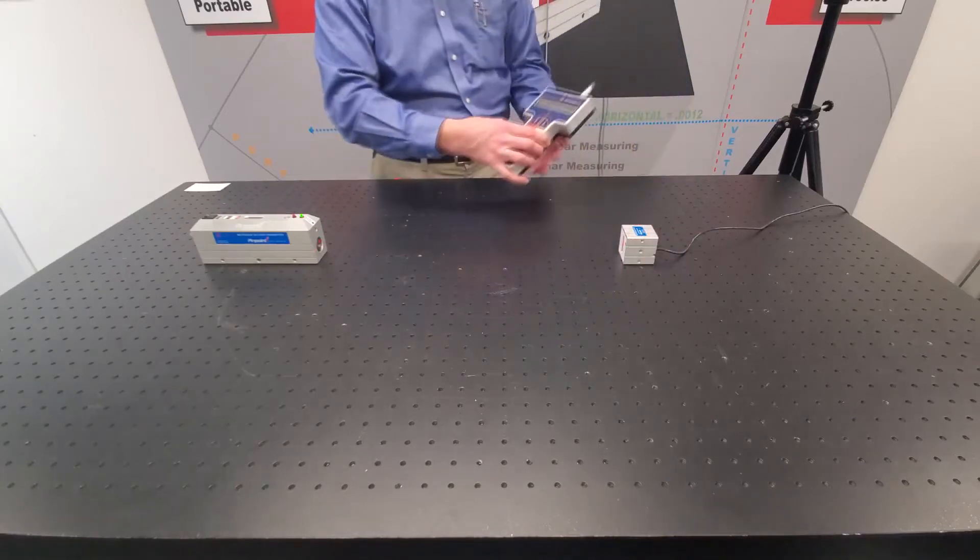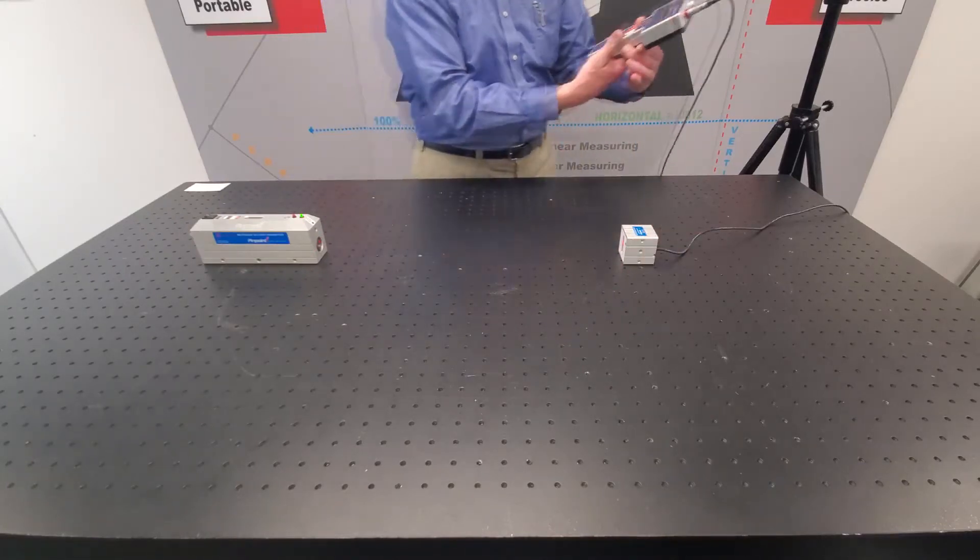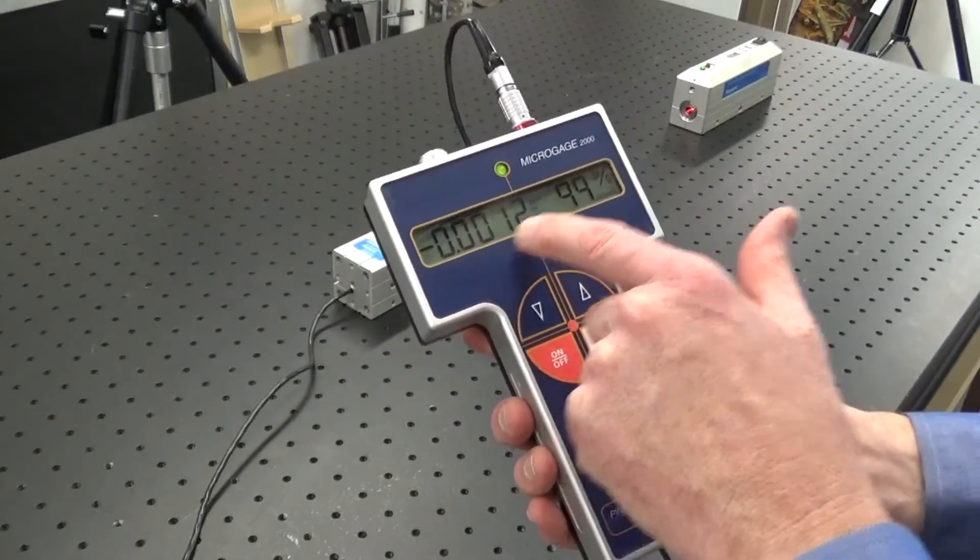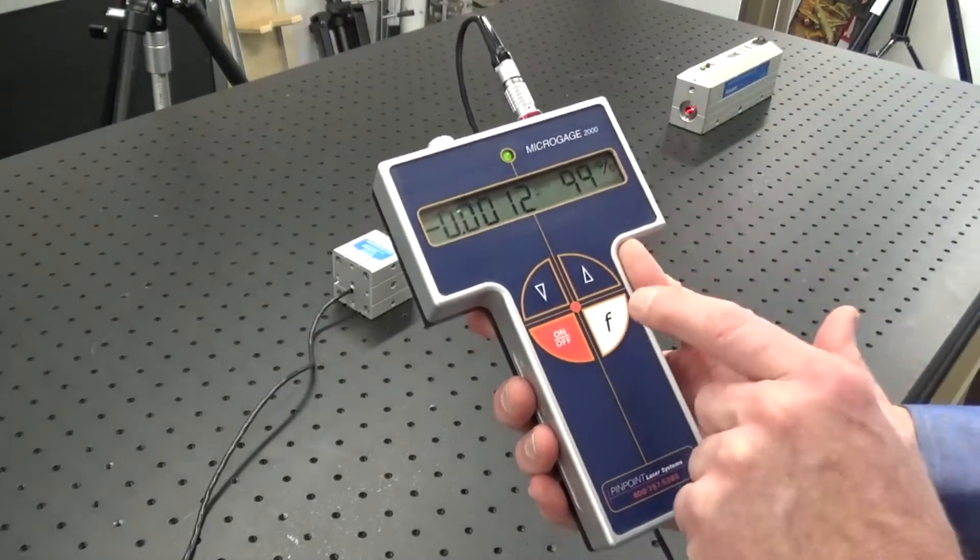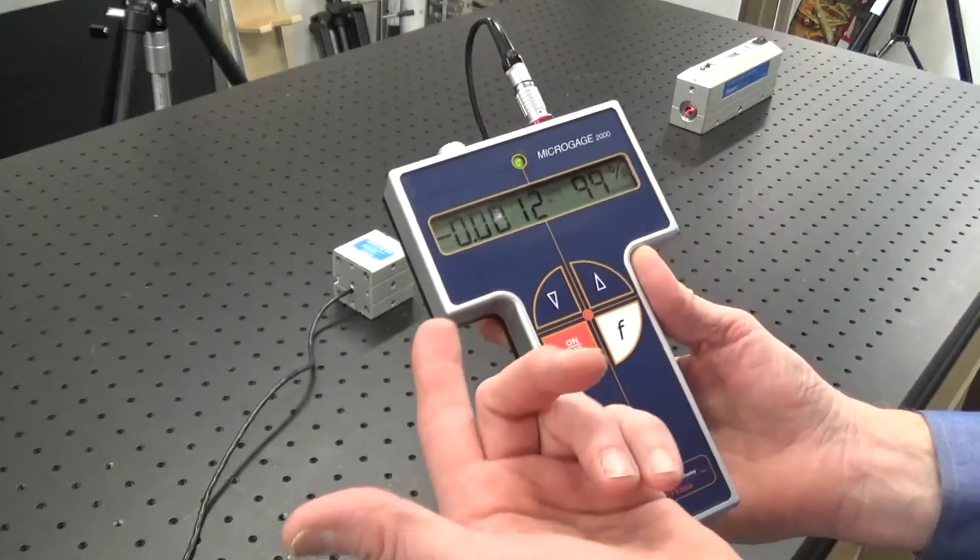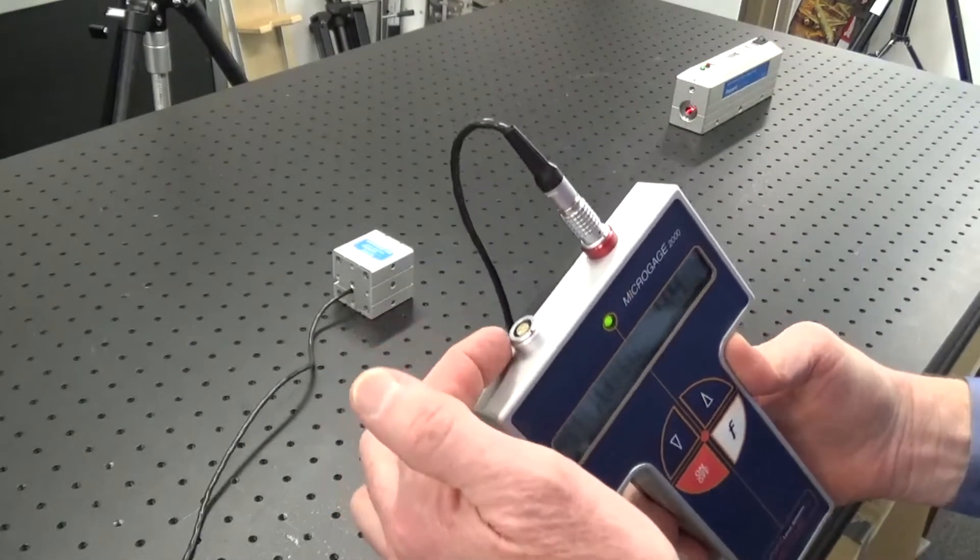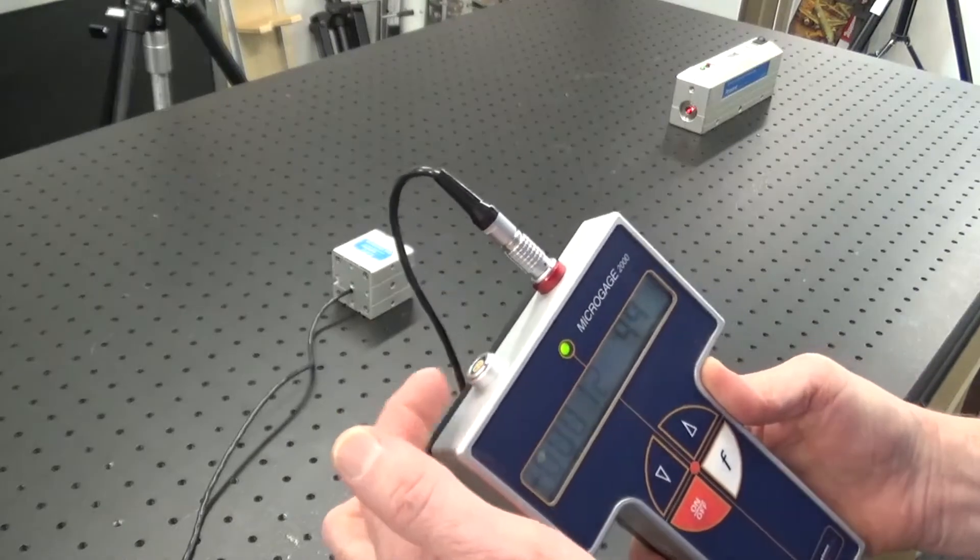The display unit is handheld and has a display that shows the measurement reading and also the signal strength. A function button allows you to change units and make other measurements as you need to do that. It also can be connected to a computer for recording readings.